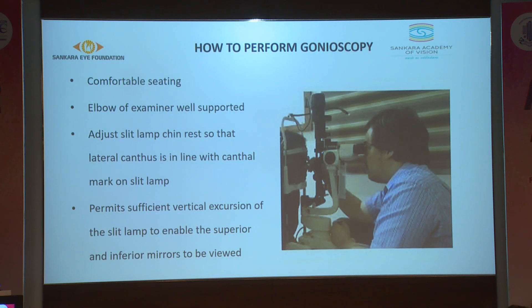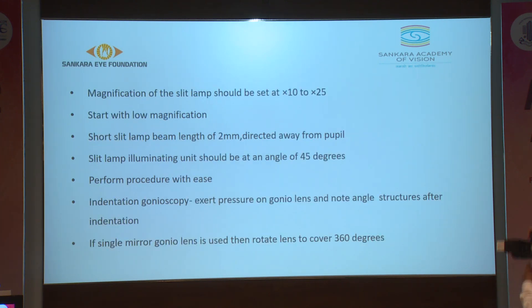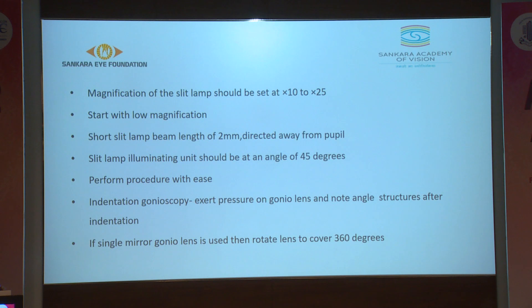To perform gonioscopy: there should be comfortable seating for both the examiner and patient, with the examiner's elbow well rested. Adjust the slit lamp chin rest so the lateral canthus is in line with the canthal marker on the slit lamp to permit vertical excursion. Explain the procedure, instill topical anesthetic drops, switch off the room light, and limit light entering the room. The patient's eyes should be in primary gaze. Magnification can be low to high, the slit beam directed away from the pupillary area, and the slit lamp illuminating unit at 45 degrees. For indentation gonioscopy, exert pressure on the gonio lens and note angle structures after indentation. If a single mirror gonio lens is used, rotate it to cover 360 degrees.